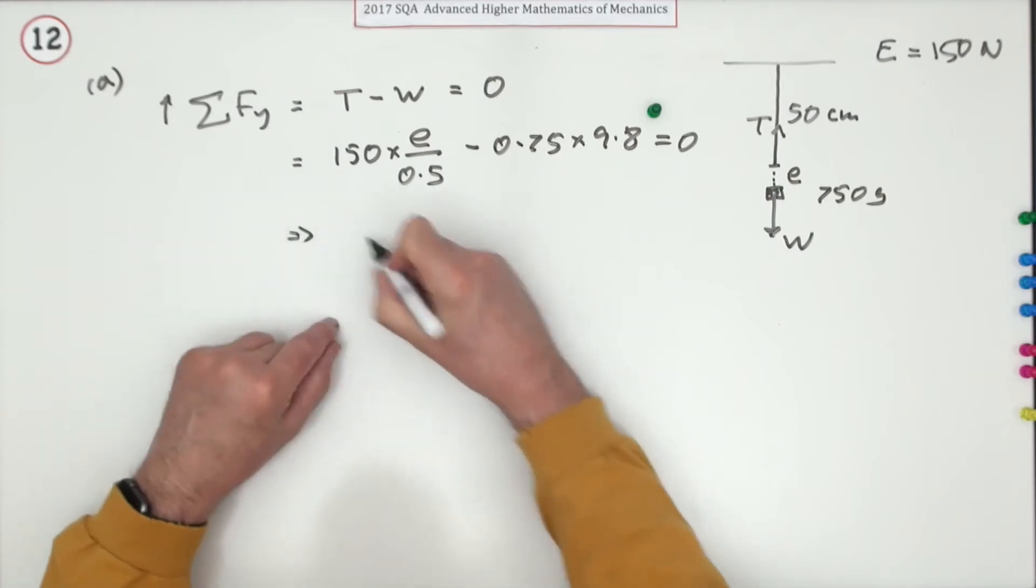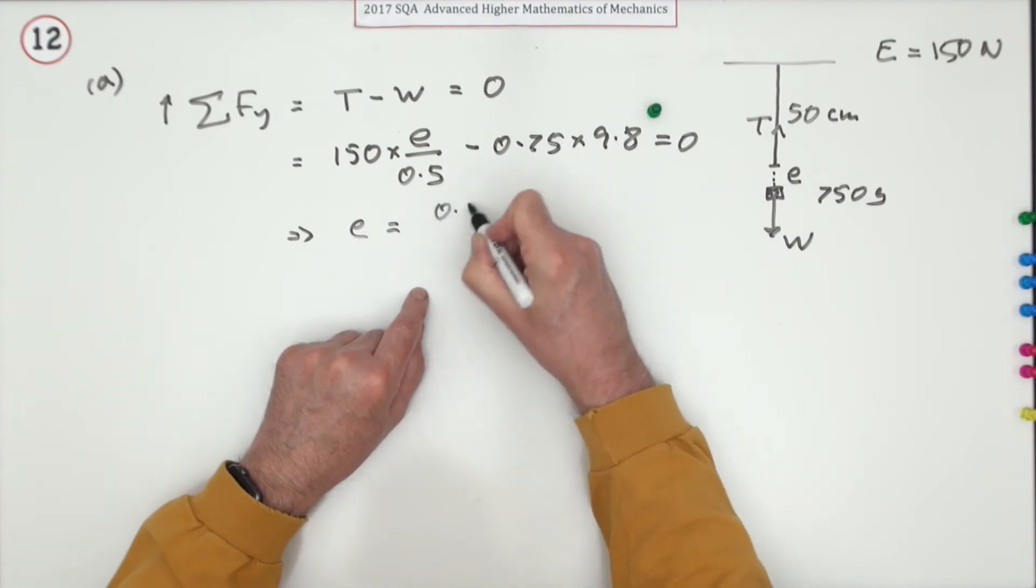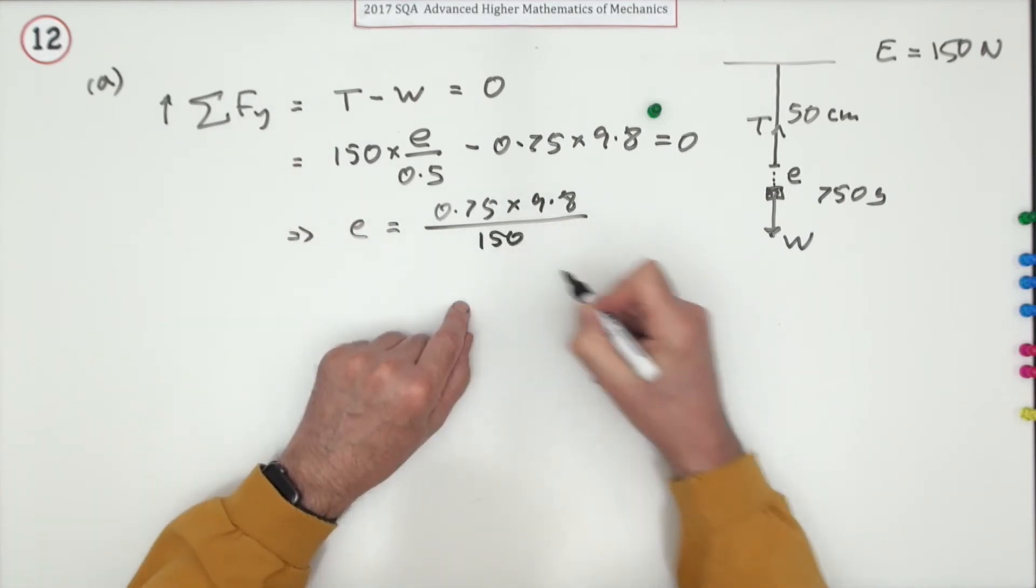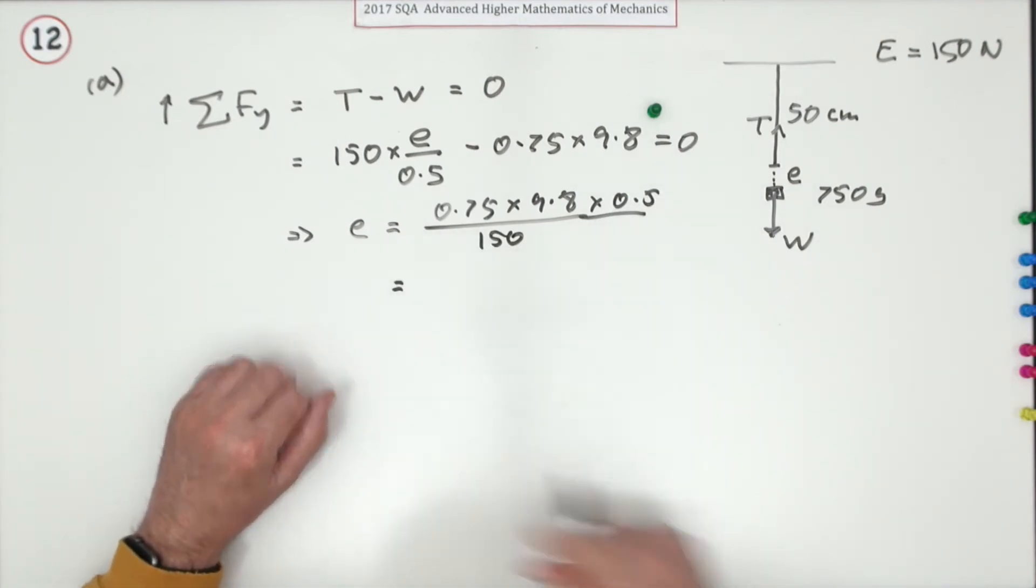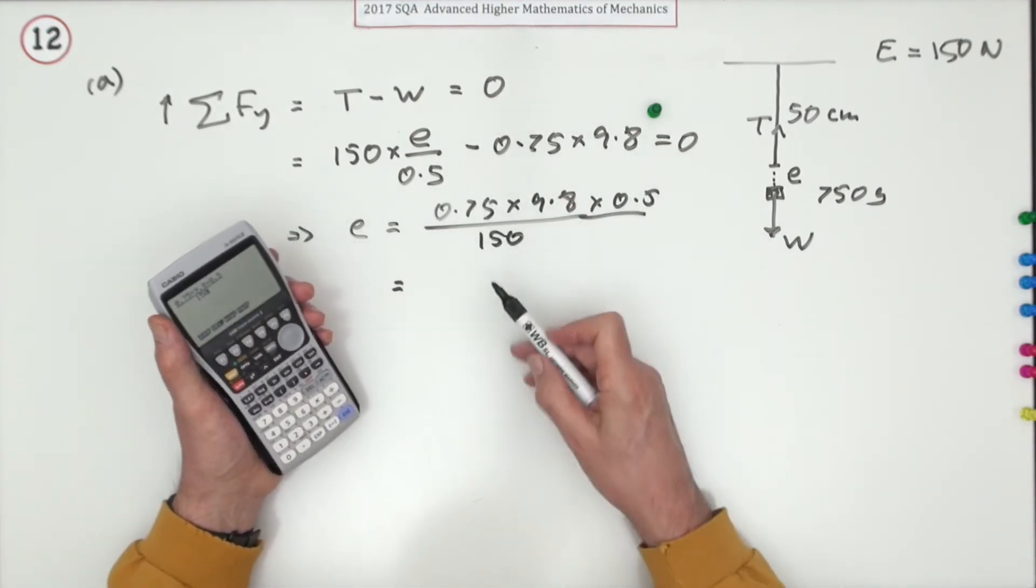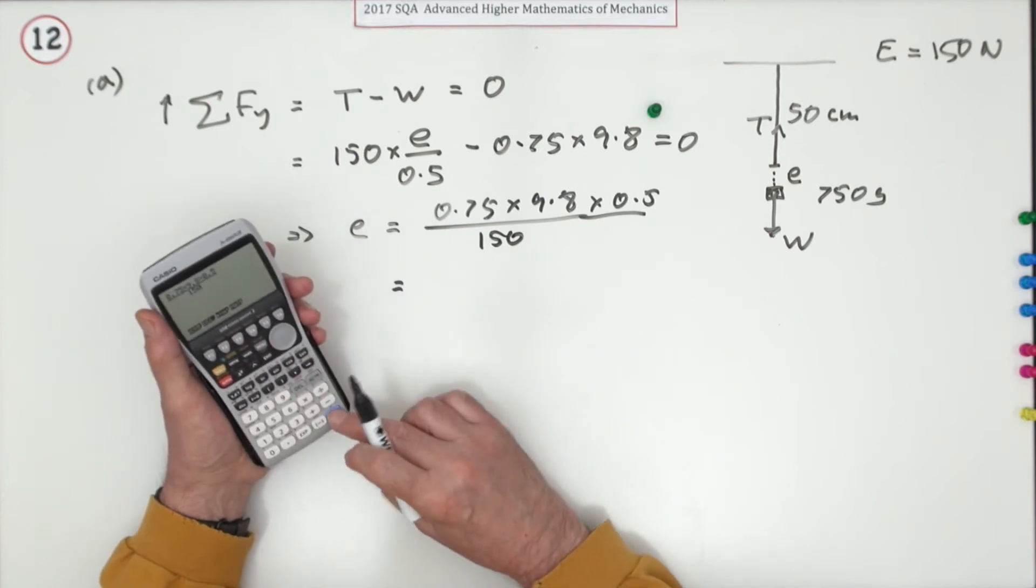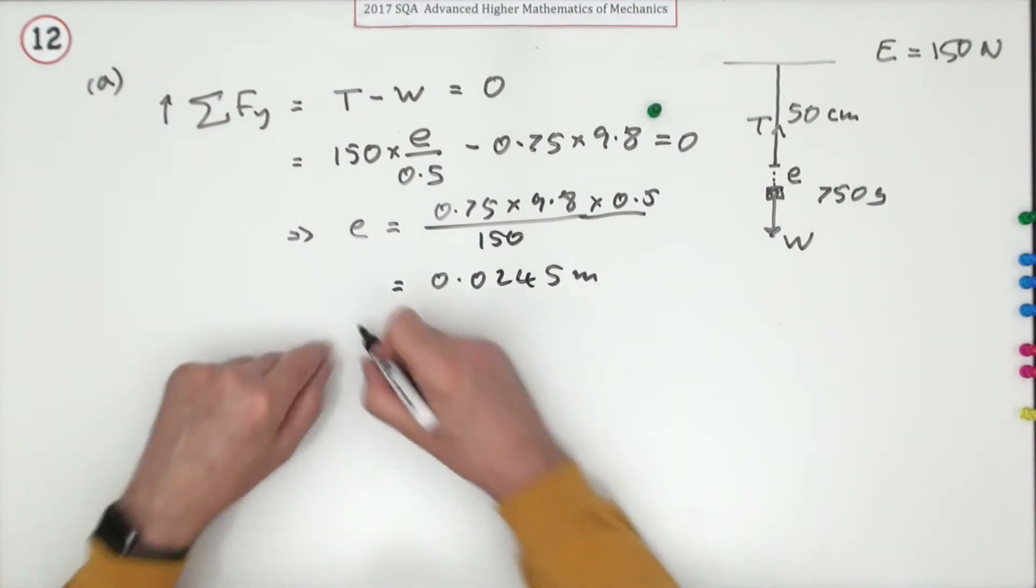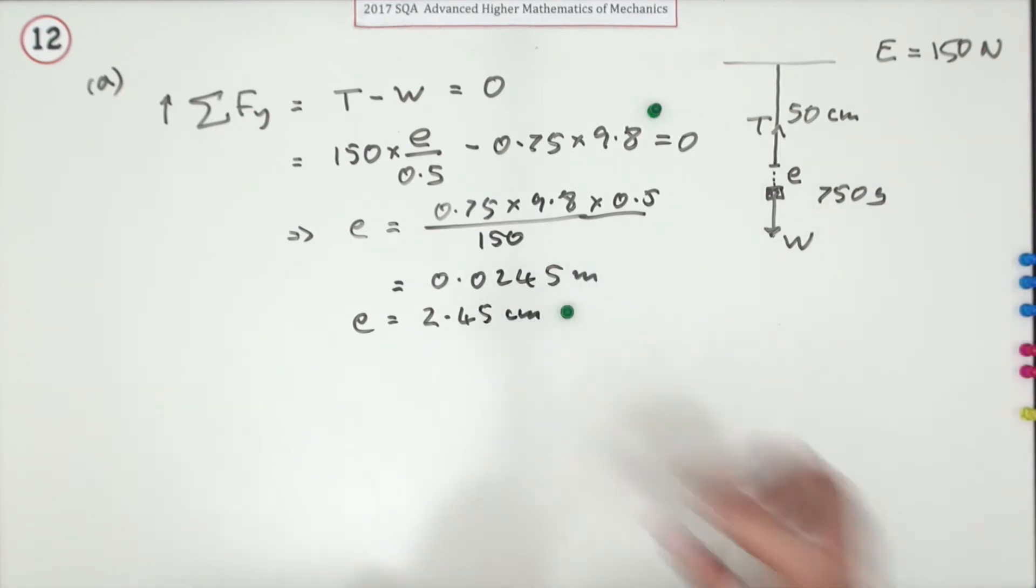So e is going to be 0.75 times 9.8 divided by the 150 but re-multiplied by the 0.5. Put it into my calculator - these things all cancel out nicely, it's going to be a quarter of this - gives you 0.0245 meters. I'll rewrite that as centimeters: 2.45 centimeters for the second mark.